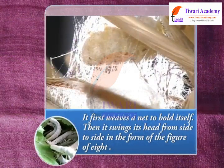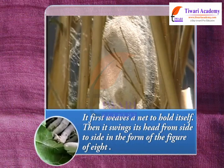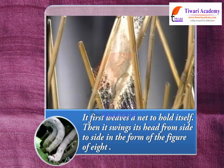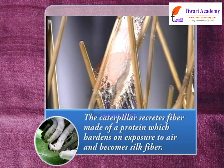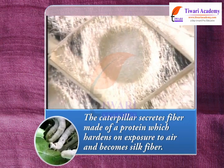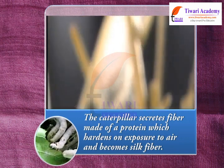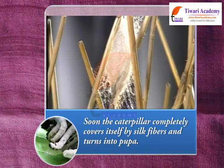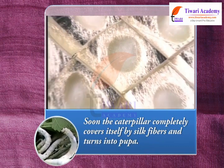It first weaves a net to hold itself. Then it swings its head from side to side in the form of the figure of eight. During these movements of the head, the caterpillar secretes fiber made of a protein, which hardens on exposure to air and forms silk fiber.